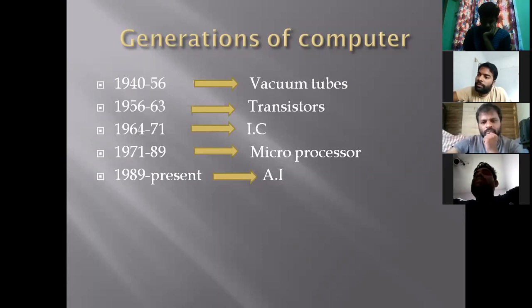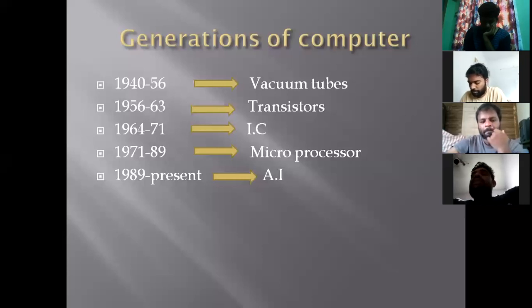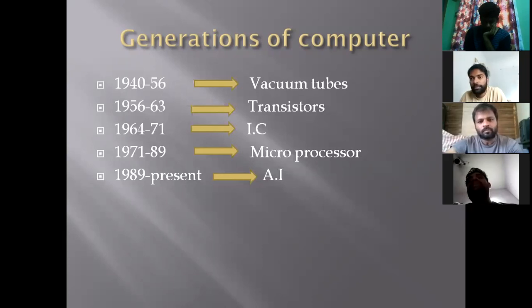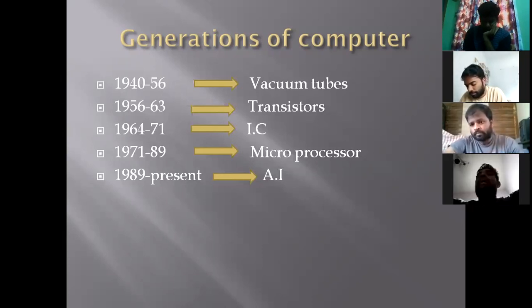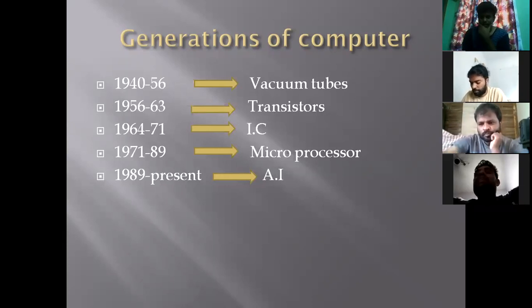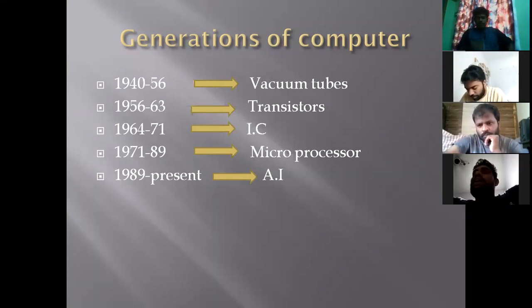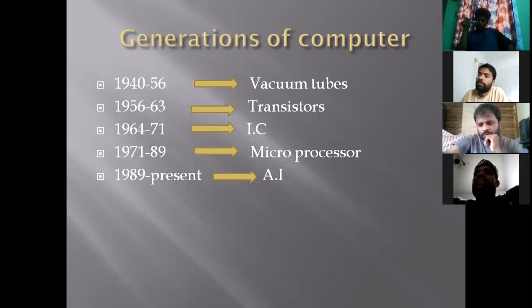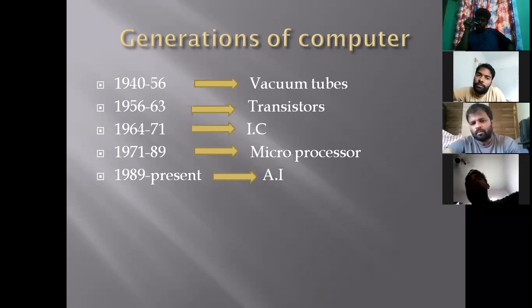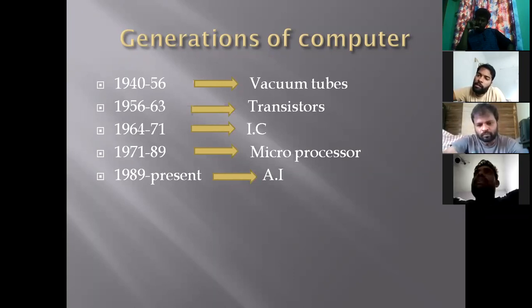In the second generation, from 1956 to 1963, transistors were introduced. Transistors modified electronic signals and reduced power consumption. They also reduced computer size. In the first generation, machine language was used; in the second generation, assembly language was used.